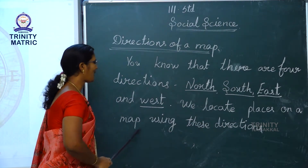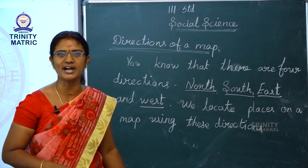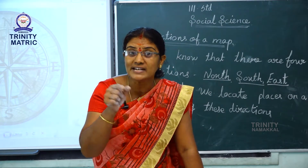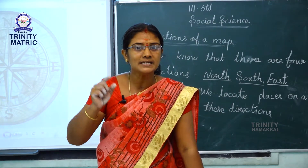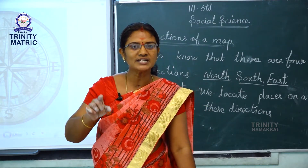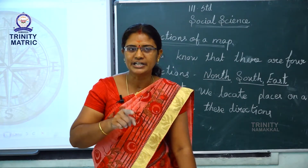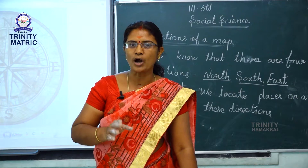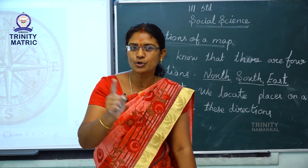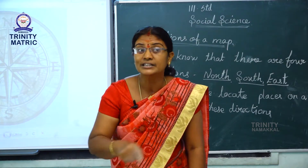We locate the places on a map using these directions. In early times, sailors used a compass to find their way while sailing. A compass looks like a watch. It has a needle that always points to the north. Once you know where north is, you can find the other three directions.